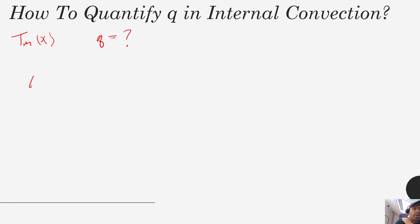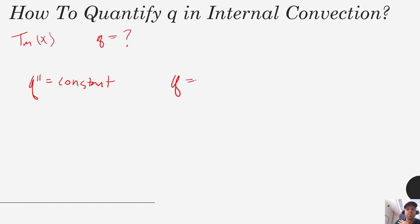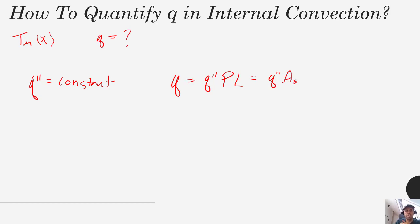In the scenario where your flux is constant, calculating Q is actually quite easy. We would be assuming that our flux is applied uniformly over the entire pipe or channel. So calculating Q would just be a matter of multiplying that flux by the appropriate surface area — the flux times the channel's perimeter times L, which is the same as the flux times the total surface area of the pipe or channel.